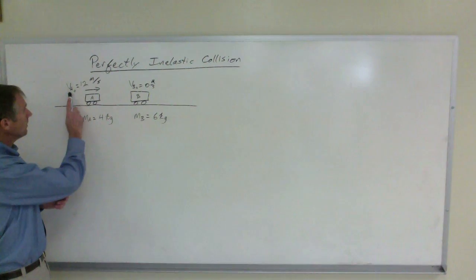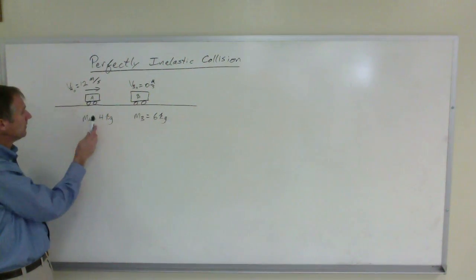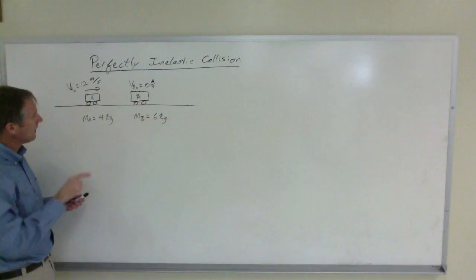So here we have cart A has a mass of four kilograms traveling with an initial speed of 12 meters per second to the right.